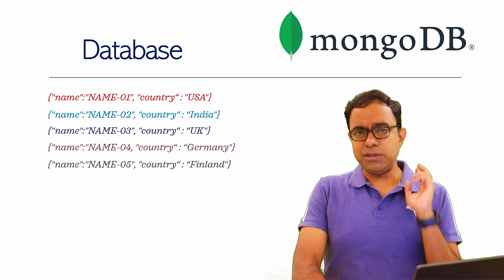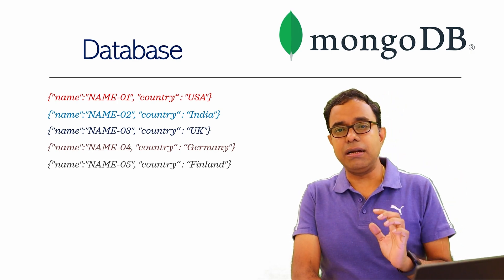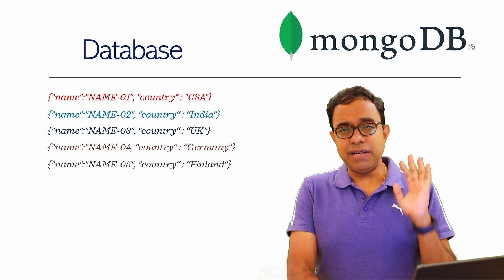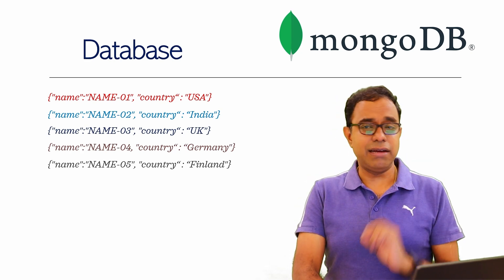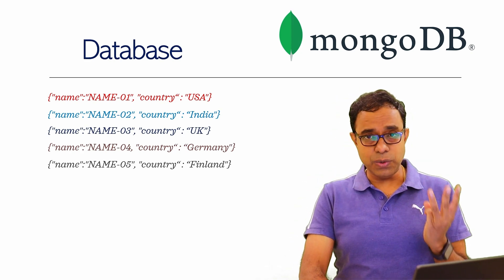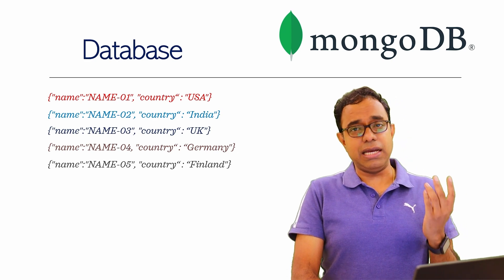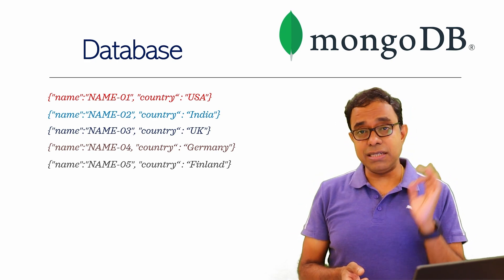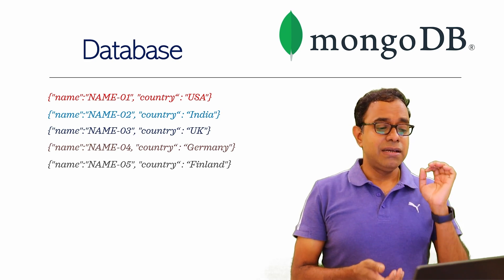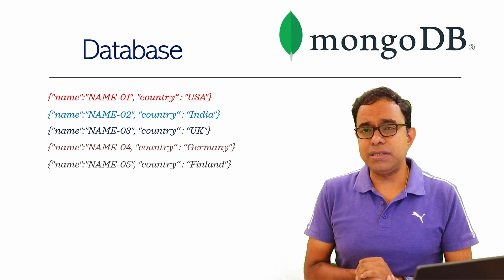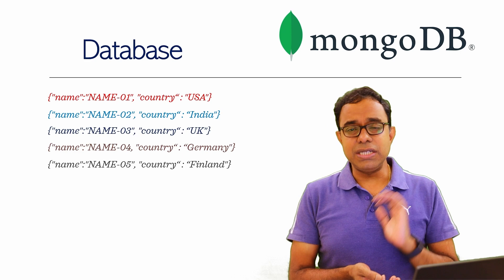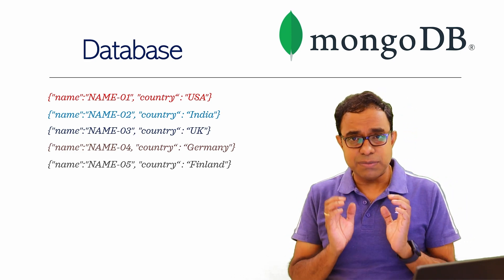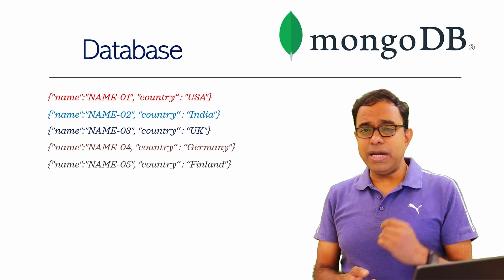Let me show you a database. It is a document with two fields: name and country. There are names one through five and five countries — USA, India, UK, Germany, and Finland. In the database, which I'll show in MongoDB Compass, there will be 10,000 records — 10,000 names scattered across these five countries.